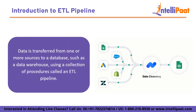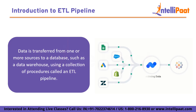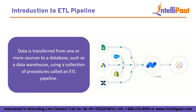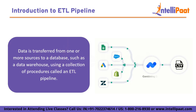Introduction to ETL pipeline. Data is transferred from one or more sources to a database such as a data warehouse using a collection of procedures called an ETL pipeline. Three interrelated processes are used to move data from one database to another: extraction, transformation and loading. An ETL pipeline, also known as a data pipeline, is used to carry out ETL operations. A group of tools and procedures called data pipelines are used to move data from one system to another where it may be stored and handled in a different way. Additionally, pipelines make it possible for data to be automatically gathered from various sources, transformed and combined into a unique high-performance data storage.